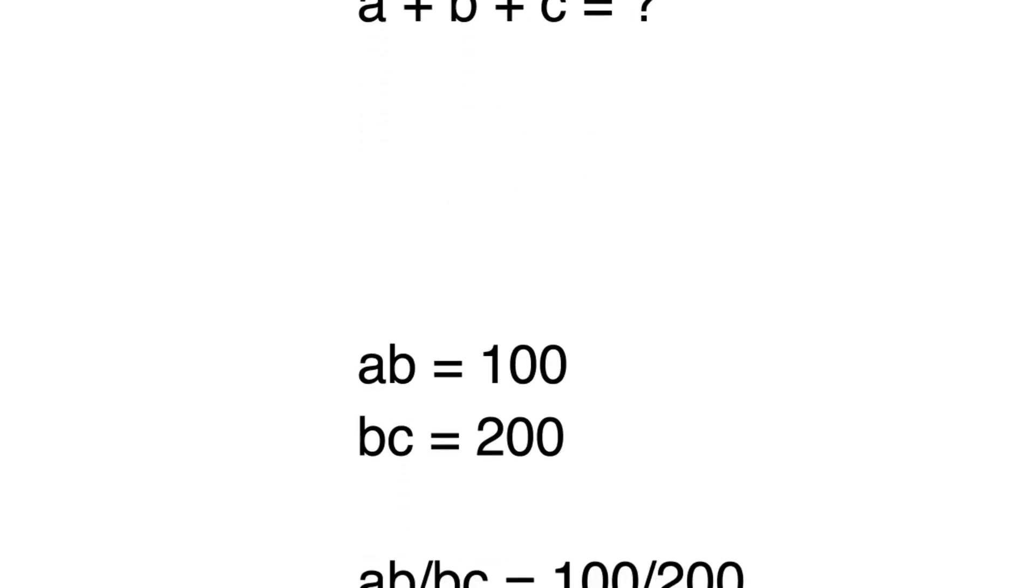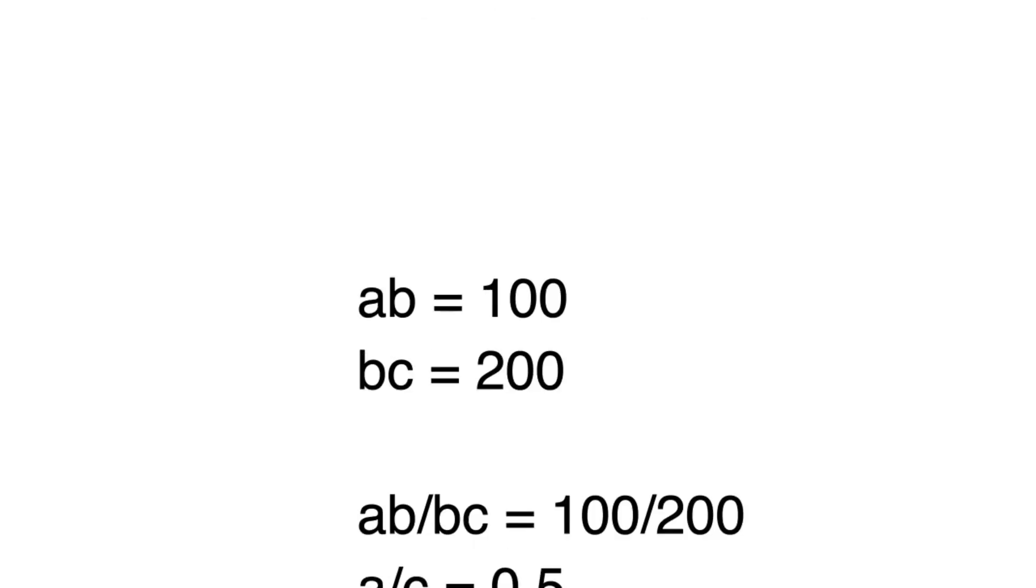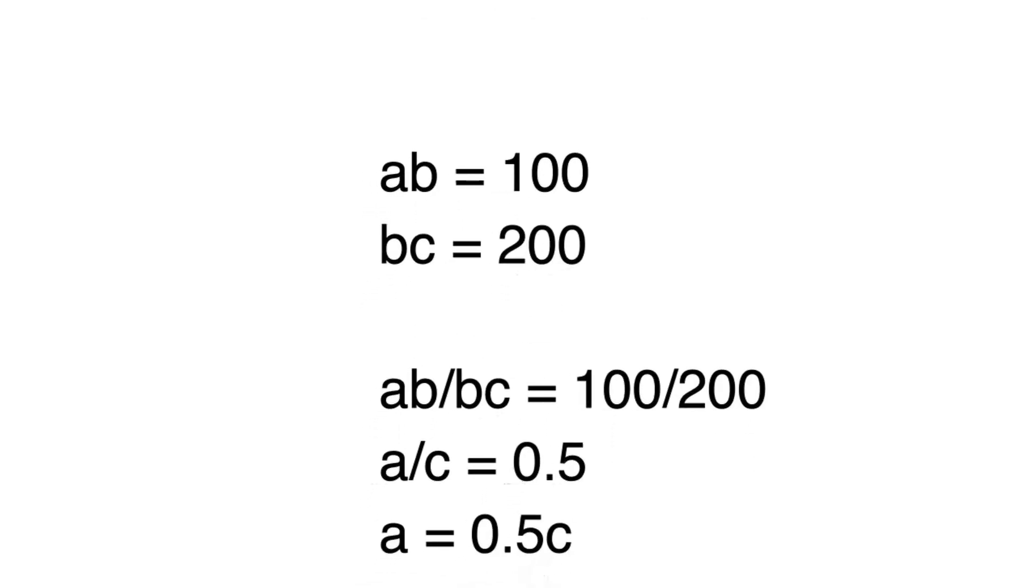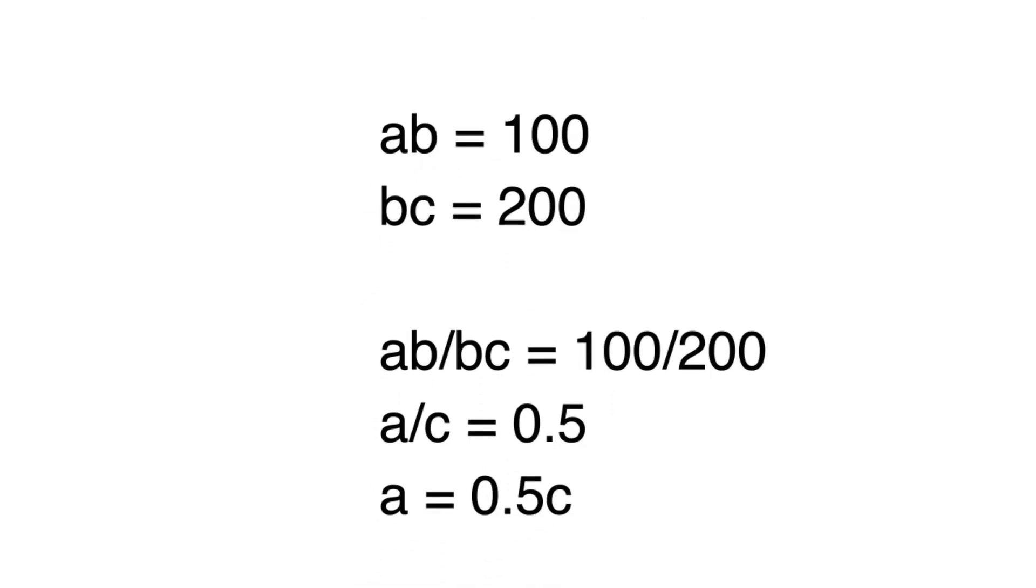Okay, so first off is to recognize that there is a ratio between AB and BC. We know that if we put AB over BC, that's equivalent to 100 over 200. B over B is just 1, and so that cancels out. So we can say A over C equals 100 over 200.